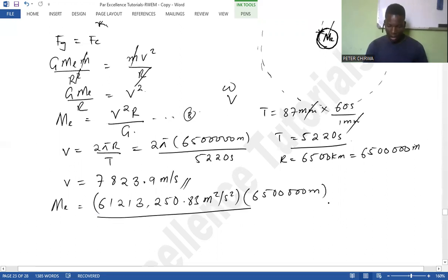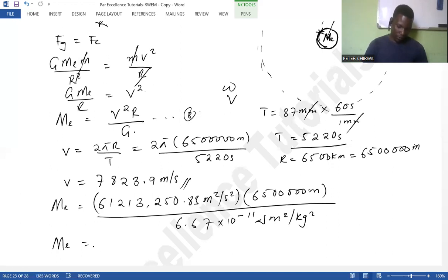Now we are also multiplying by the radius 6,500,000 meters over the gravitational constant, which is 6.67 times 10 to the power negative 11. So the mass of the Earth is going to be 5.967 times 10 to the power 24 kg.